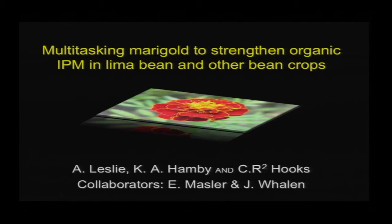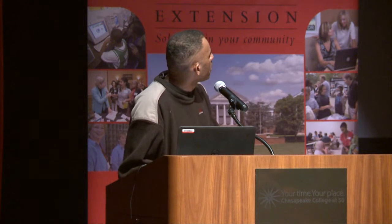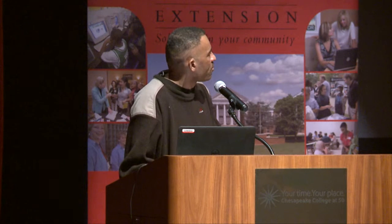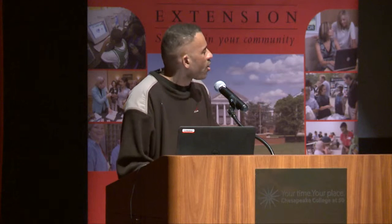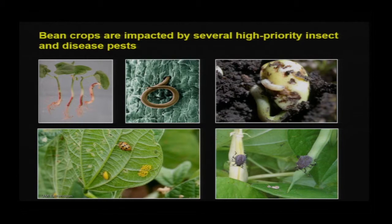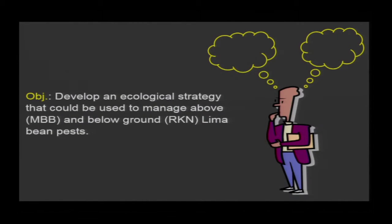This was another study we recently did — I'm not going to show data, but it shows the philosophy of how you go about choosing a plant species. The title of this project was 'Multitasking Marigold to Strengthen Organic IPM in Lima Beans and Other Bean Crops.' We know that beans are impacted by a complex of pests ranging from plant disease to nematodes to insects to weeds. The two we were mainly interested in were nematodes and the Mexican bean beetle. The objective was to develop an ecological strategy to manage the Mexican bean beetle feeding above the plant and root-knot nematodes attacking the roots below. Consistent with the IPM definition, my first task was learning about the biology of these pests to find a weak link.